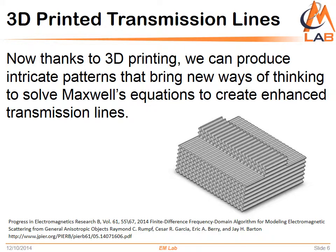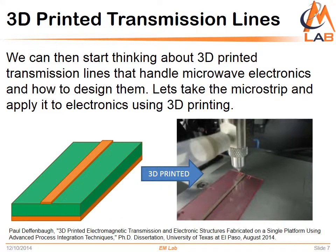How can we start thinking about 3D printing microstrips or transmission lines? Let's start with what we already know. EEs and electronics are very common to us. Modern electronics rely heavily on wireless technology, and any new electronic fabrication technology such as 3D printing must handle microwave electronics. Transmission lines are the building blocks of microwave circuits — this was mentioned by Paul Deffenbach, who has a PhD in EE, in his dissertation '3D Printing Electromagnetic Transmission and Electronic Structures.' He mentions how everything that involves microstrips needs to contemplate wireless transmission.